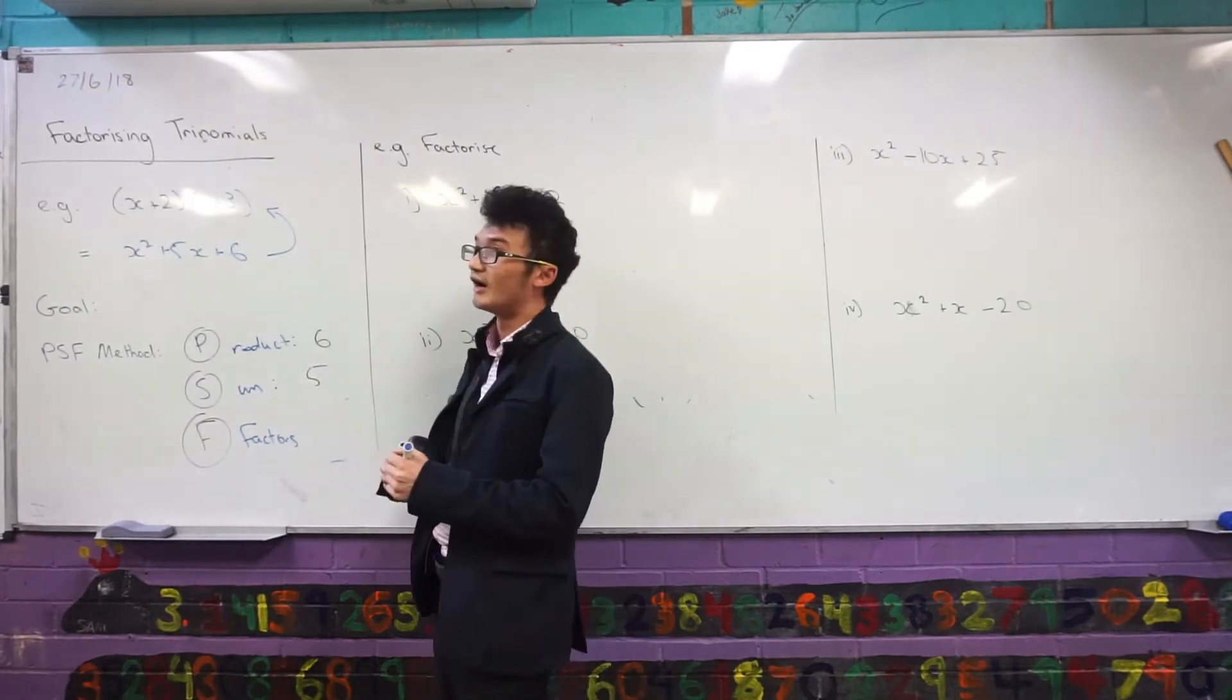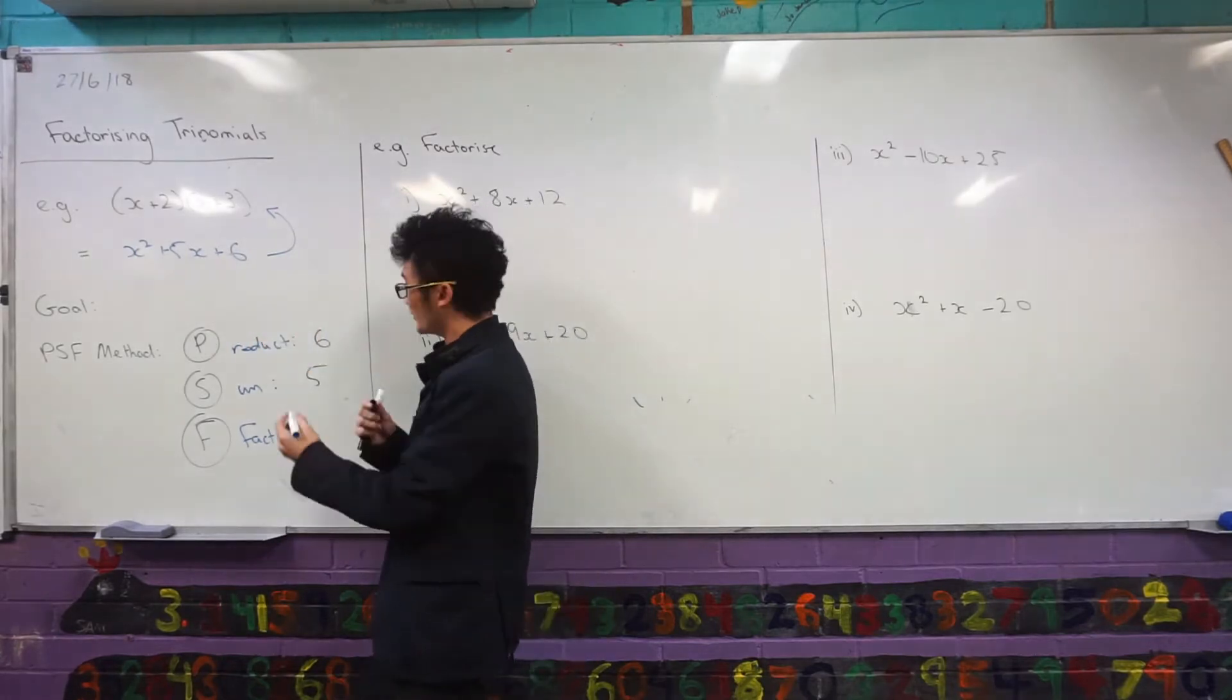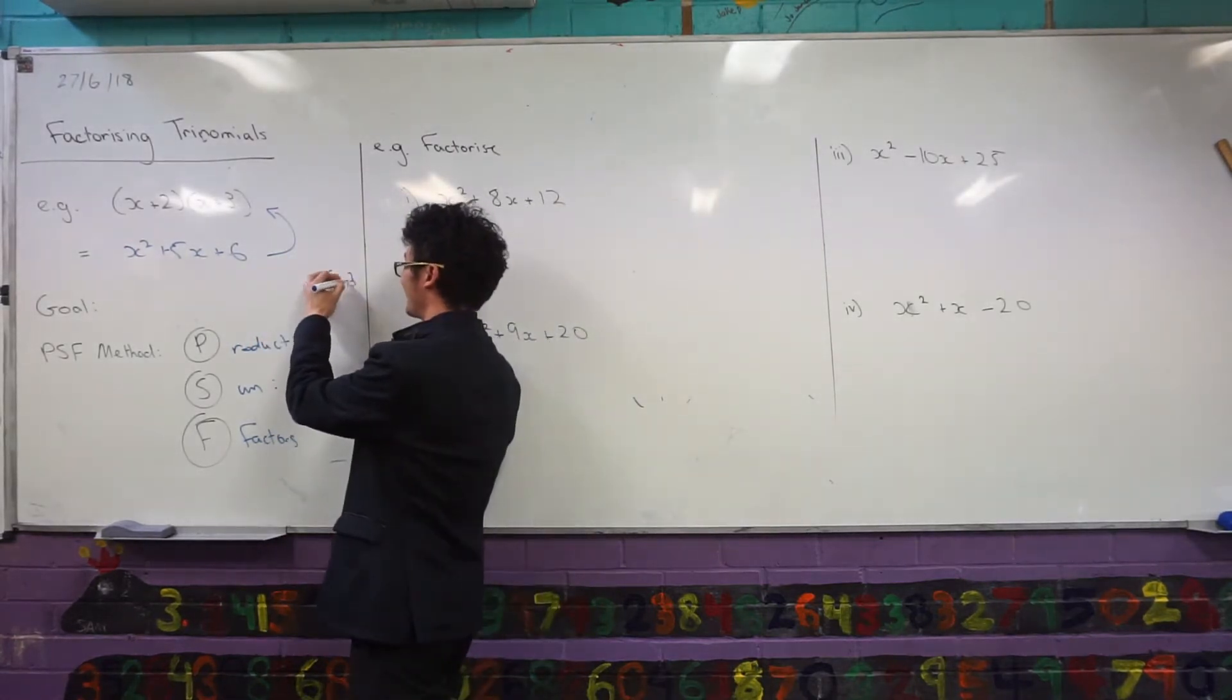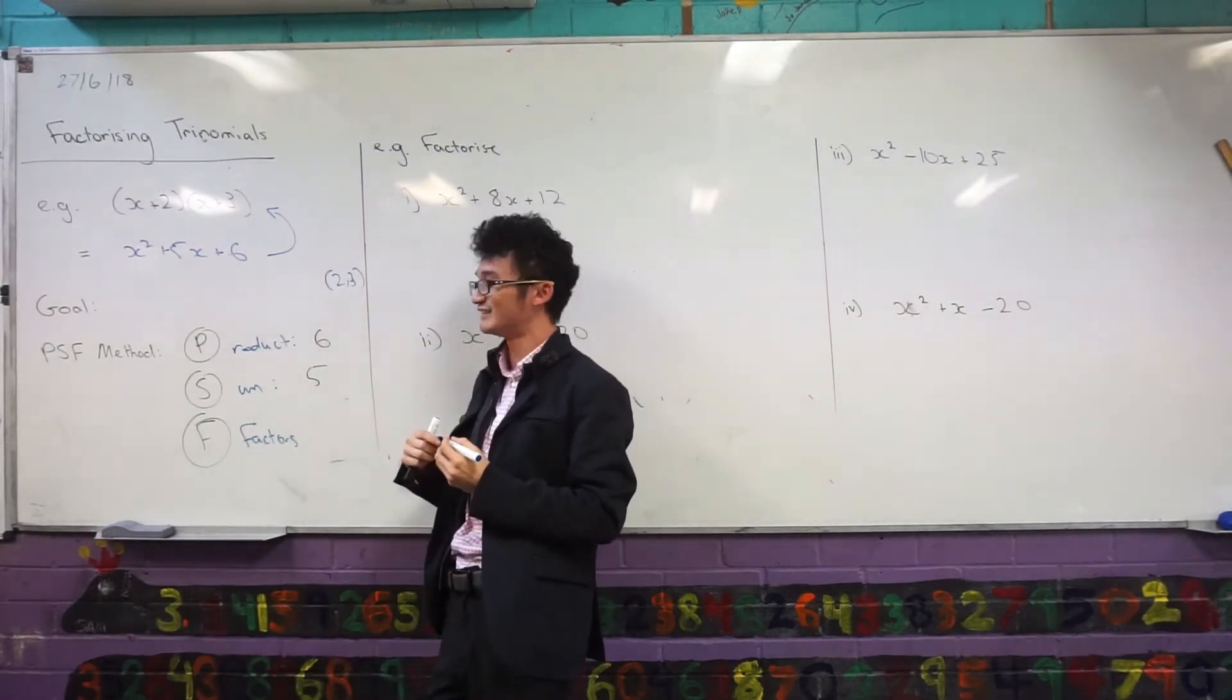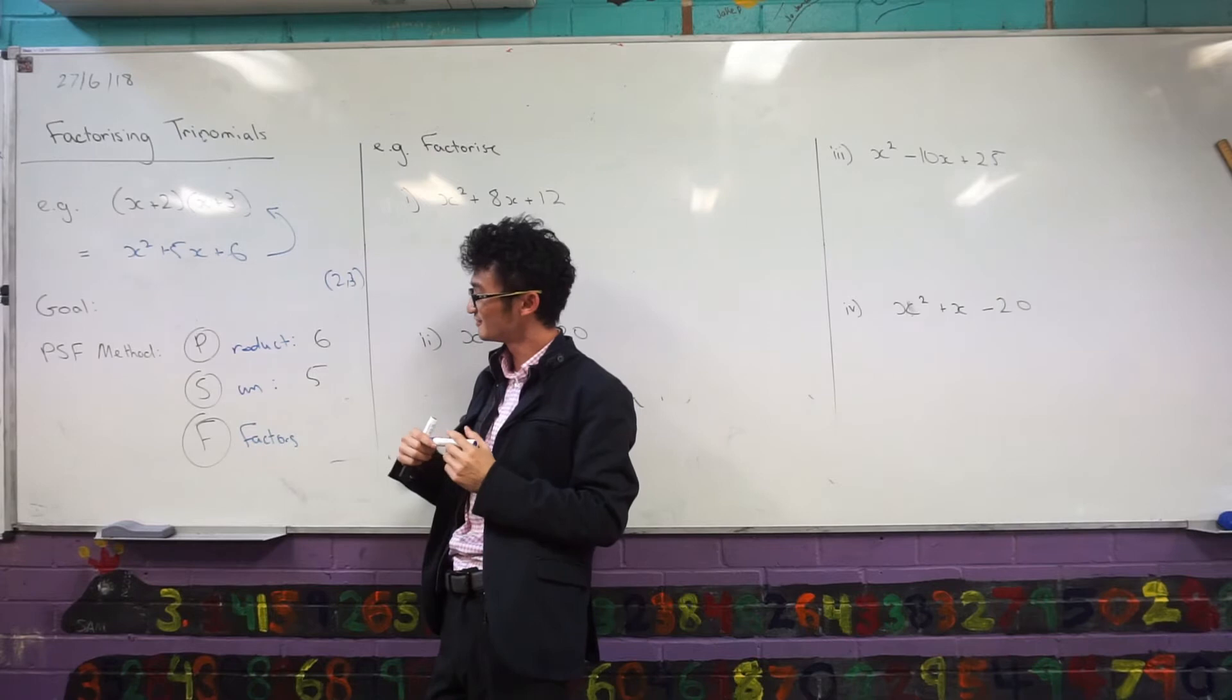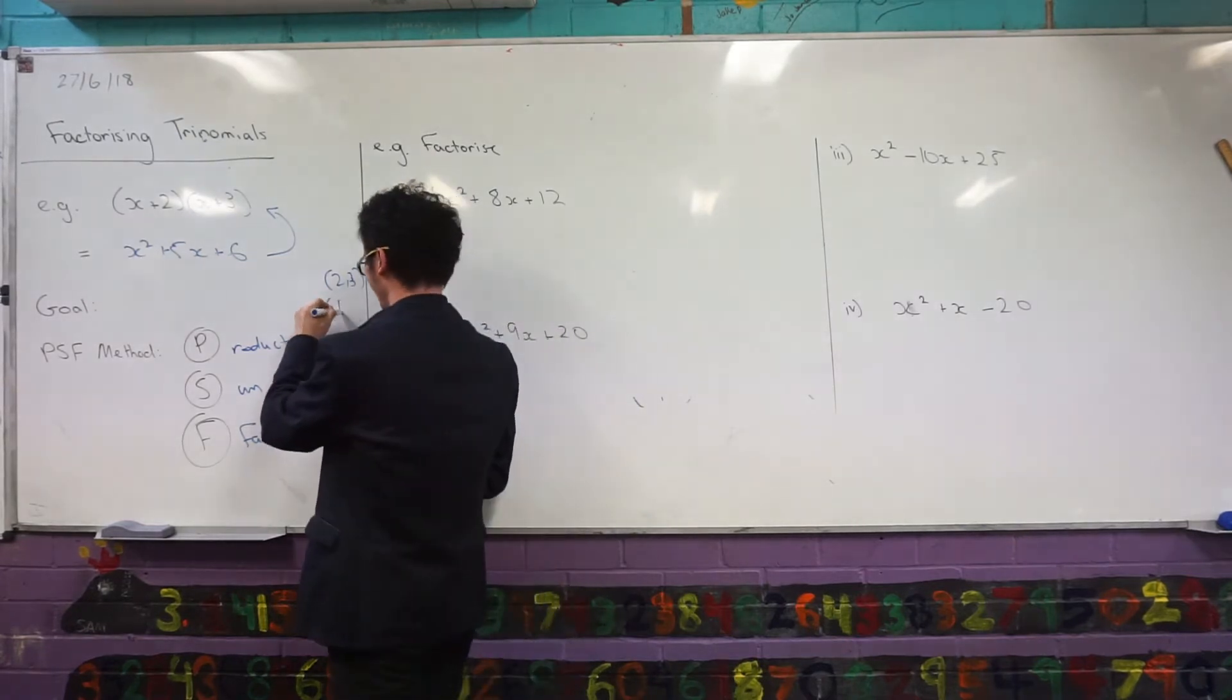You could say, okay, what two numbers multiplied by six? Can you give me a pair? Two and three, that is one, and that's the right one. Well, let's have another one. Ben, another two numbers that multiply by six? One and six. Okay, one and six.